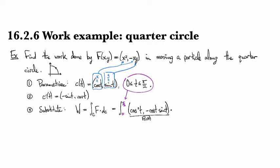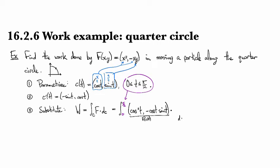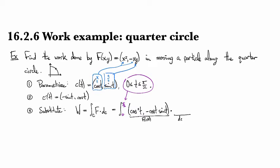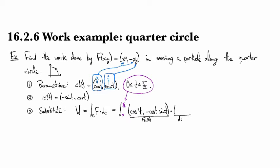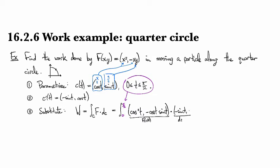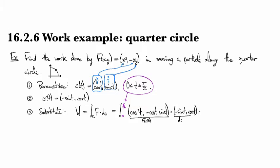And then I'm going to have my dc. So that's going to be c prime of t, dt.